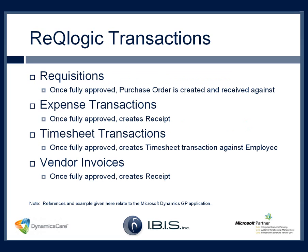I'd like to briefly review the different transaction types in RecLogic that can be entered and reviewed. We first have requisition transactions. Requisitions are created with the intent that they'll become purchase orders pushed to the Dynamics application. RecLogic purchase orders can be received against online as well as within the Dynamics solution. The references throughout this presentation relate to Microsoft Dynamics GP. Another common transaction is the expense transaction — once fully approved, it will create a voucher in Dynamics. Requisitions and expense transactions are the most common we see implemented with clients today.